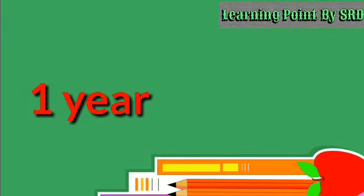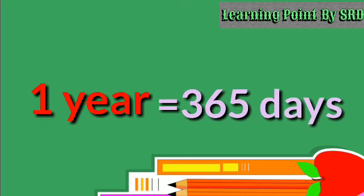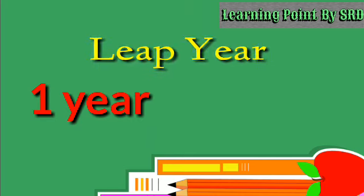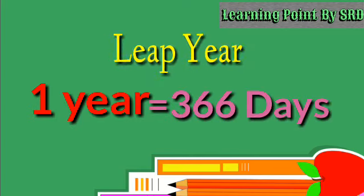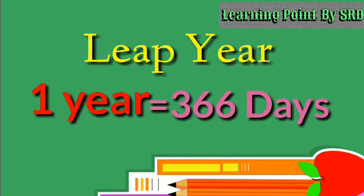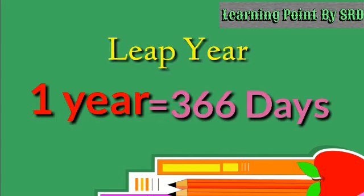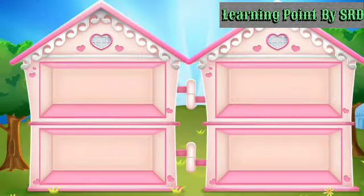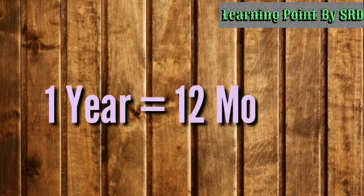One year is 365 days. But in a leap year, there are 366 days in a year. There are 12 months in a year.